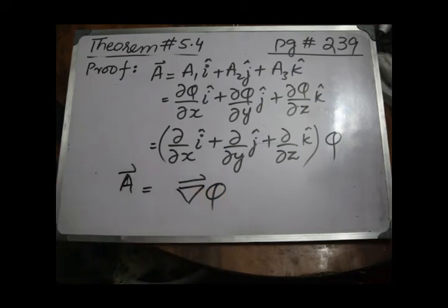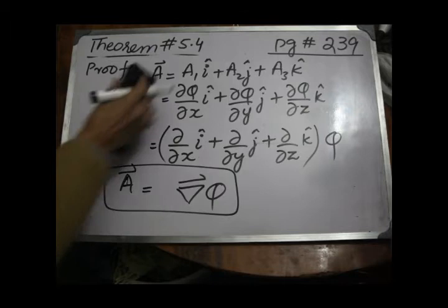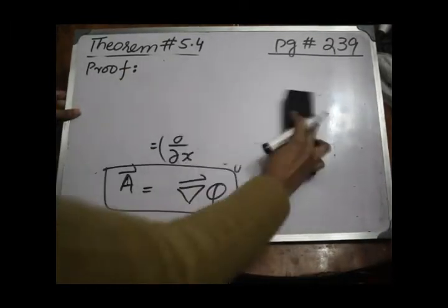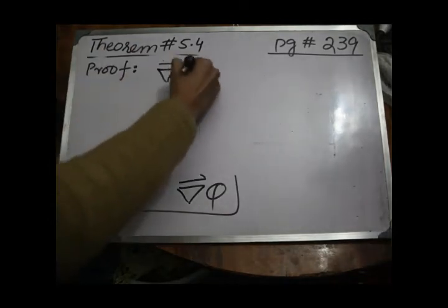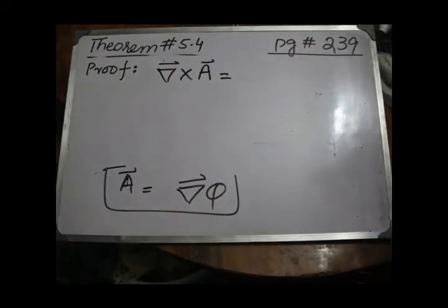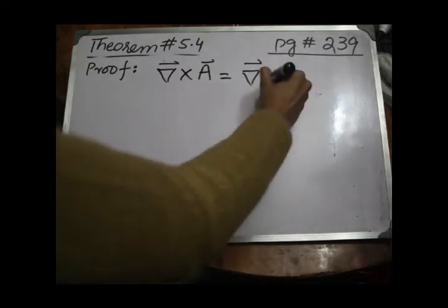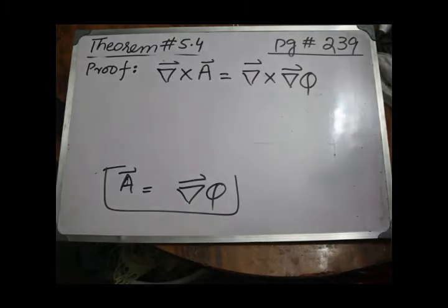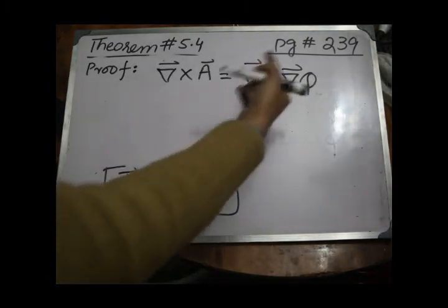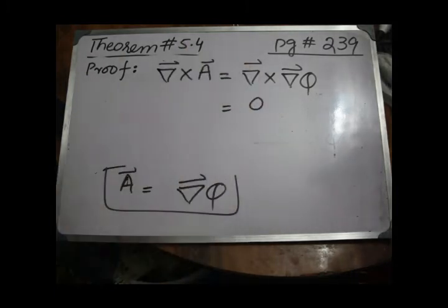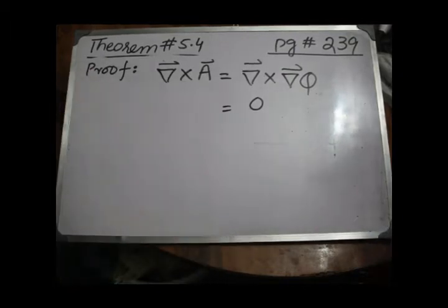Since vector a equals del-phi, we want to prove that del cross a equals zero. Using this information: del cross a equals del cross del-phi, which is the curl of the gradient of phi, whose value is always zero — this we have studied before. So the first part of the theorem is proved: assuming a1 dx plus a2 dy plus a3 dz is an exact differential, we have proved that del cross a equals zero.